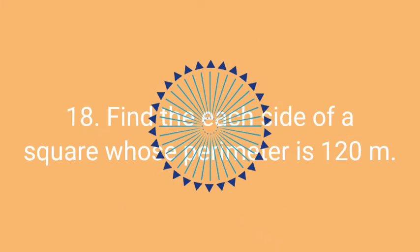Question number eighteen: Find each side of a square whose perimeter is 120 meter. Think the correct answer of this question within 10 seconds. The timer is going to start now.